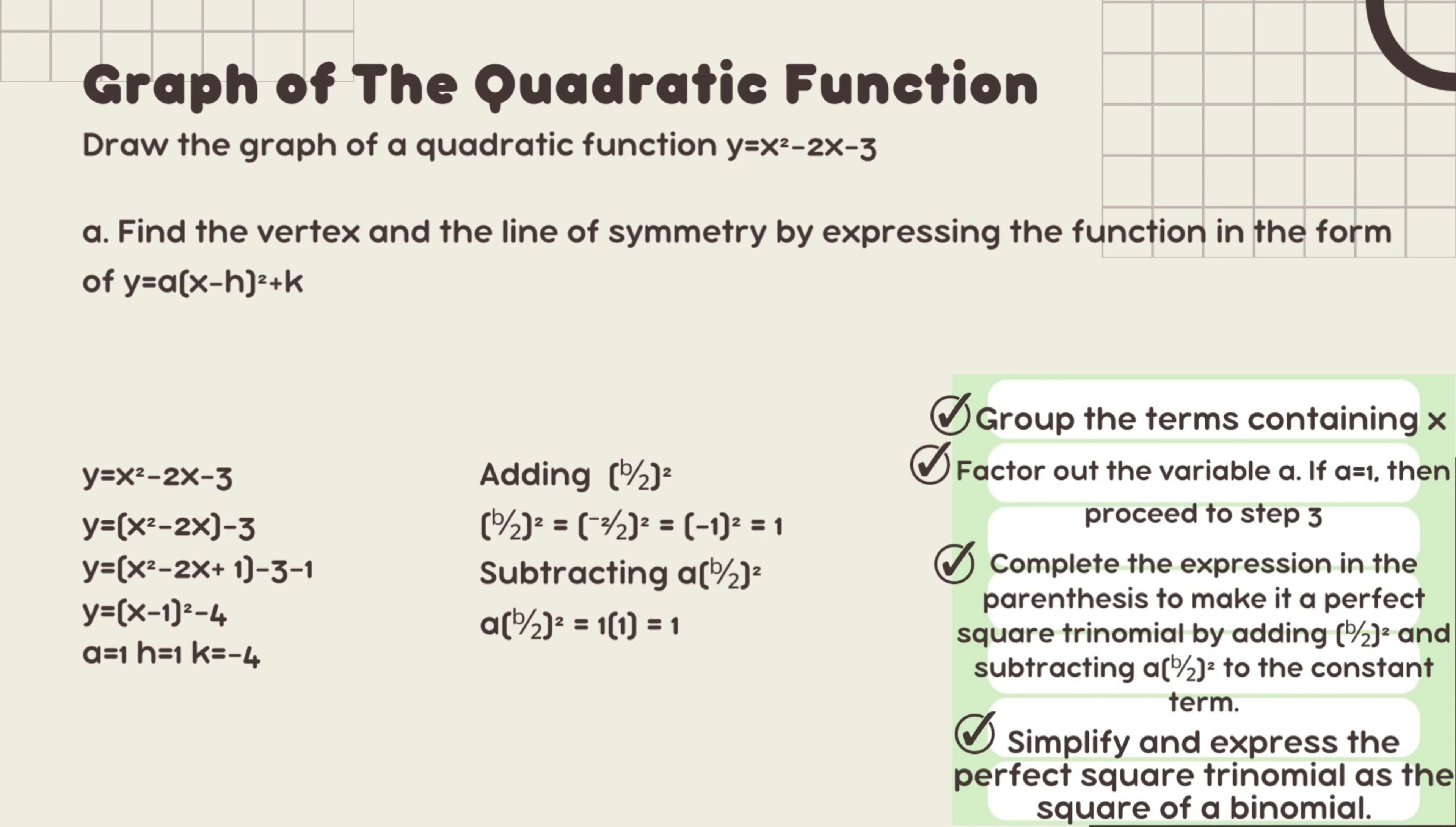So the value of our a is 1. The value of our h is 1, positive 1, correctly. Since when h is positive 1, vice versa, it will become negative 1. What's the value? Then our k, just copy, negative 4. For the vertex, we found h and k. So the value of our h is 1, then the value of our k is negative 4.